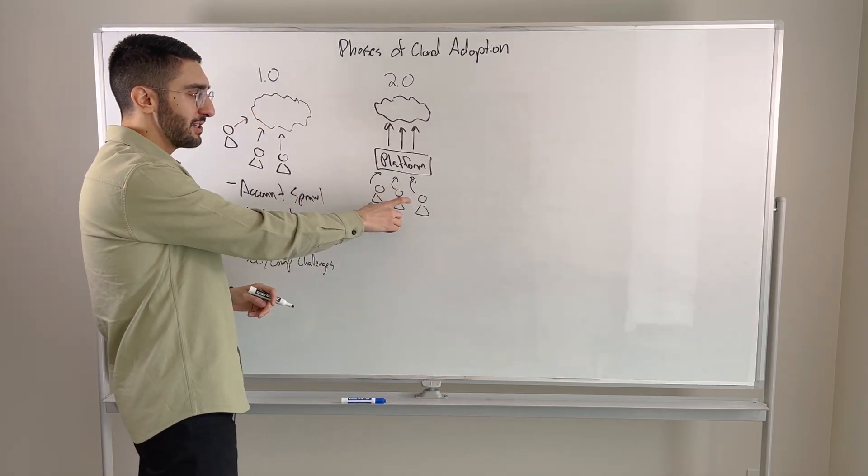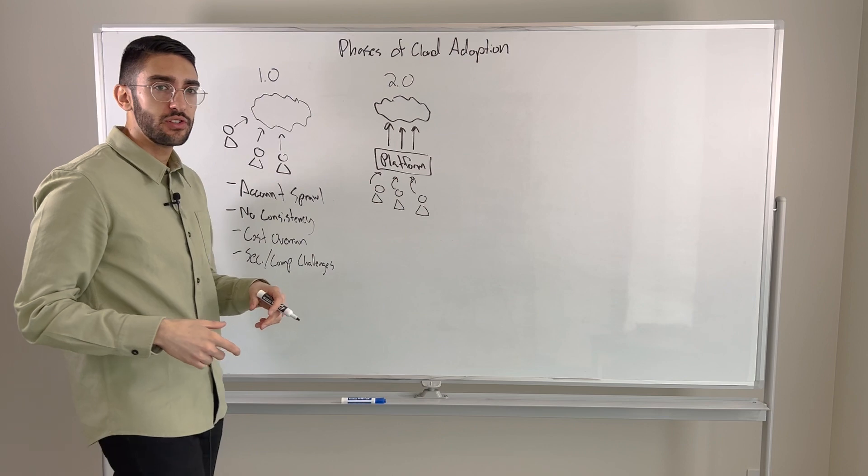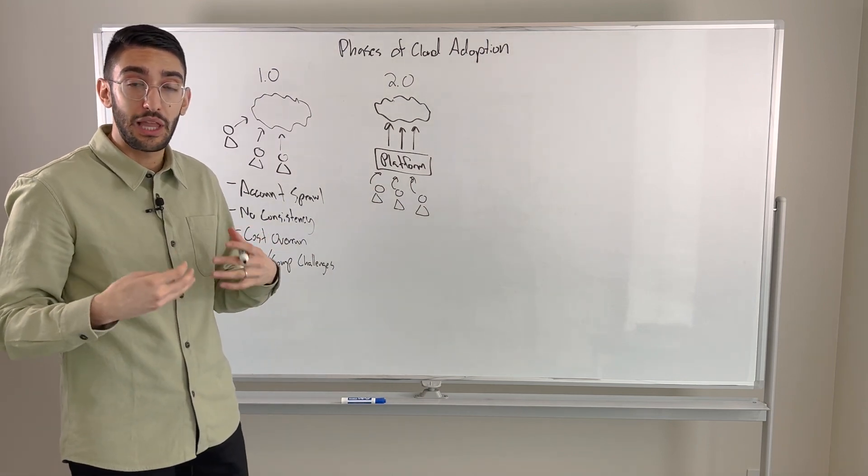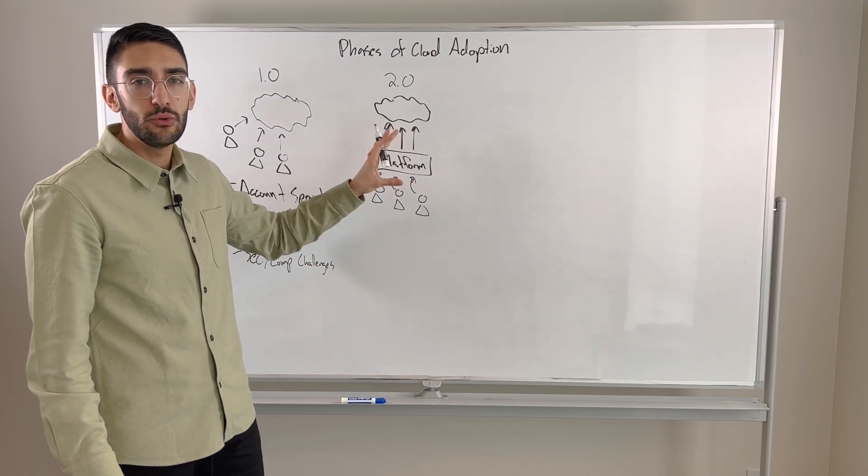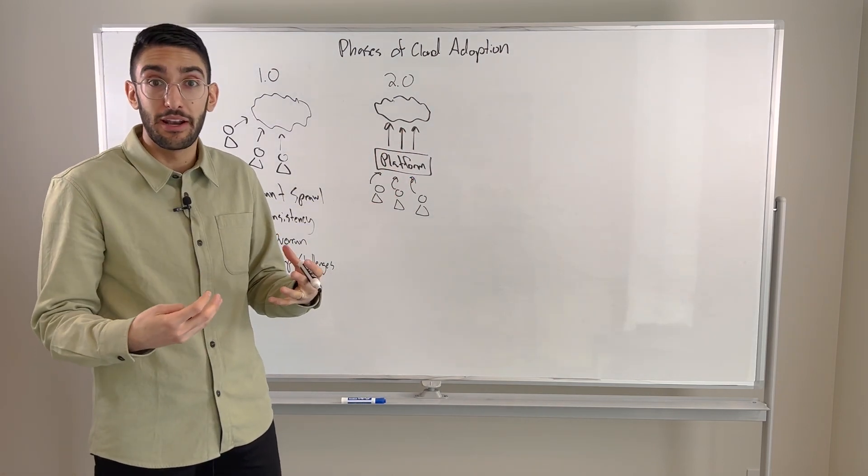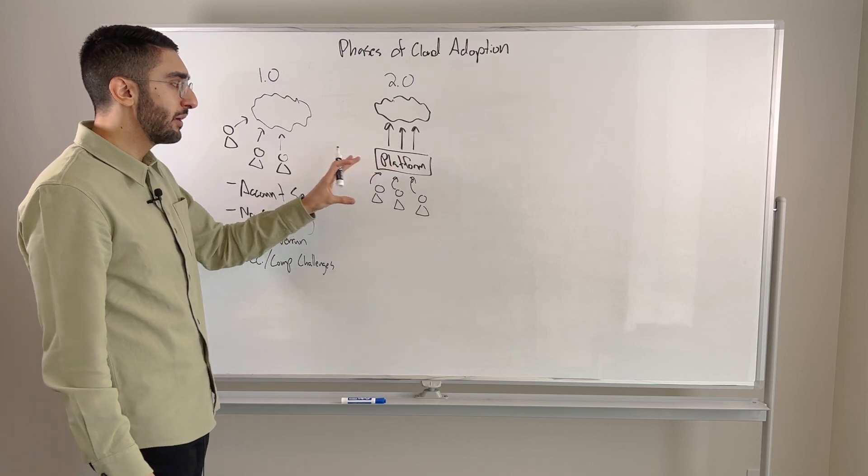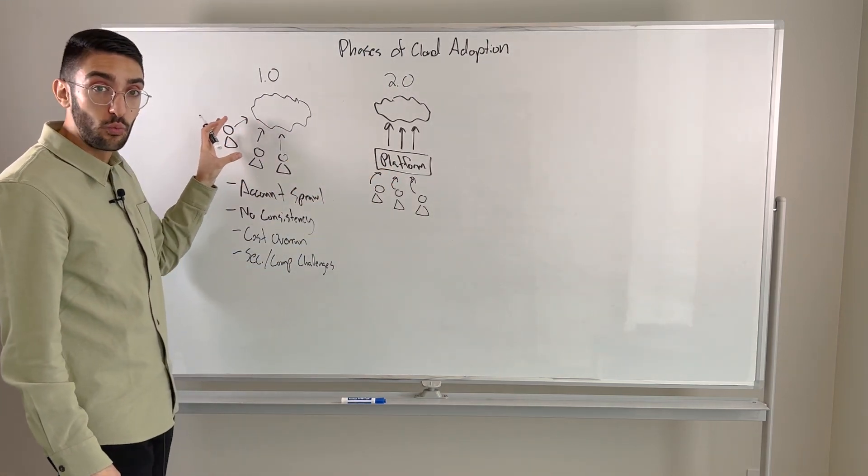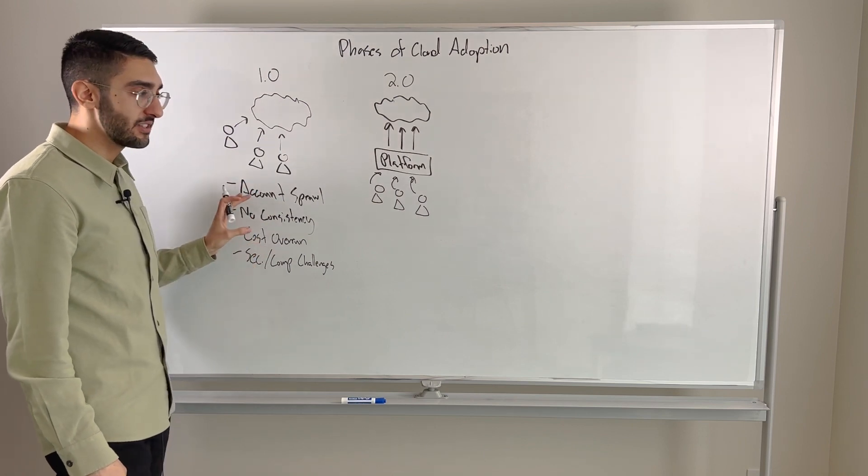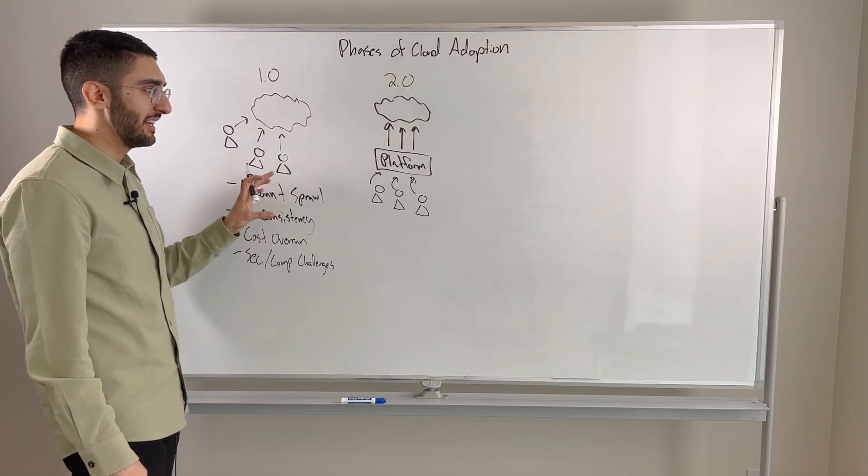So this tends to be either some organizations that are very mature platform-based organizations to begin with, they might start their cloud journey here because they're used to having a strong platform-led approach to infrastructure. For many organizations that are not used to a strong platform, they might start with this 1.0 motion, run into some of these challenges, and then recognize the need to define either a platform team.